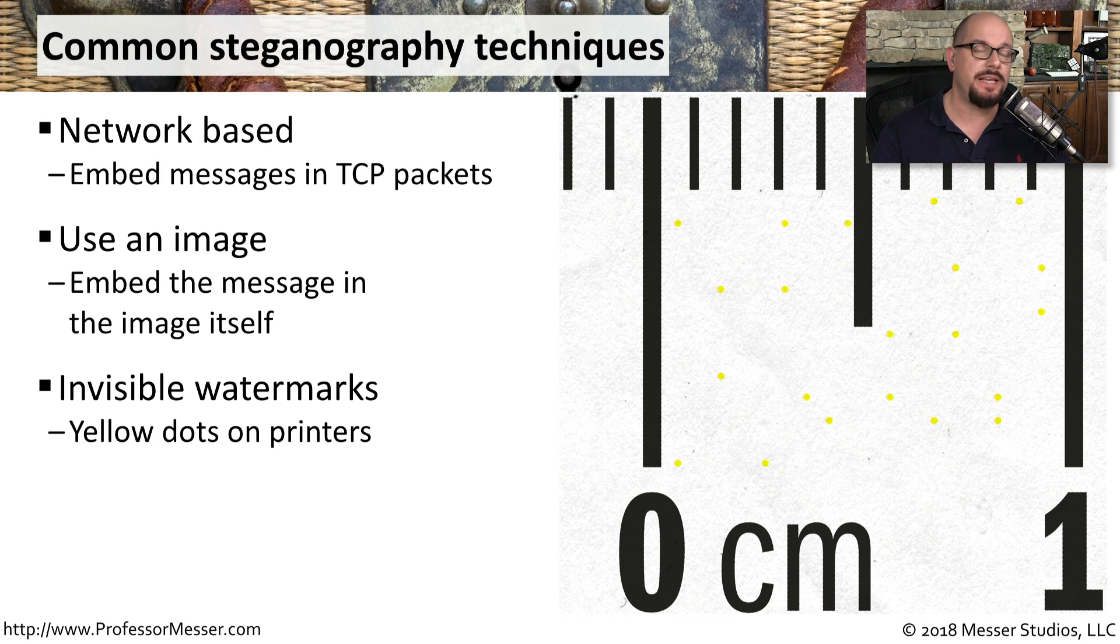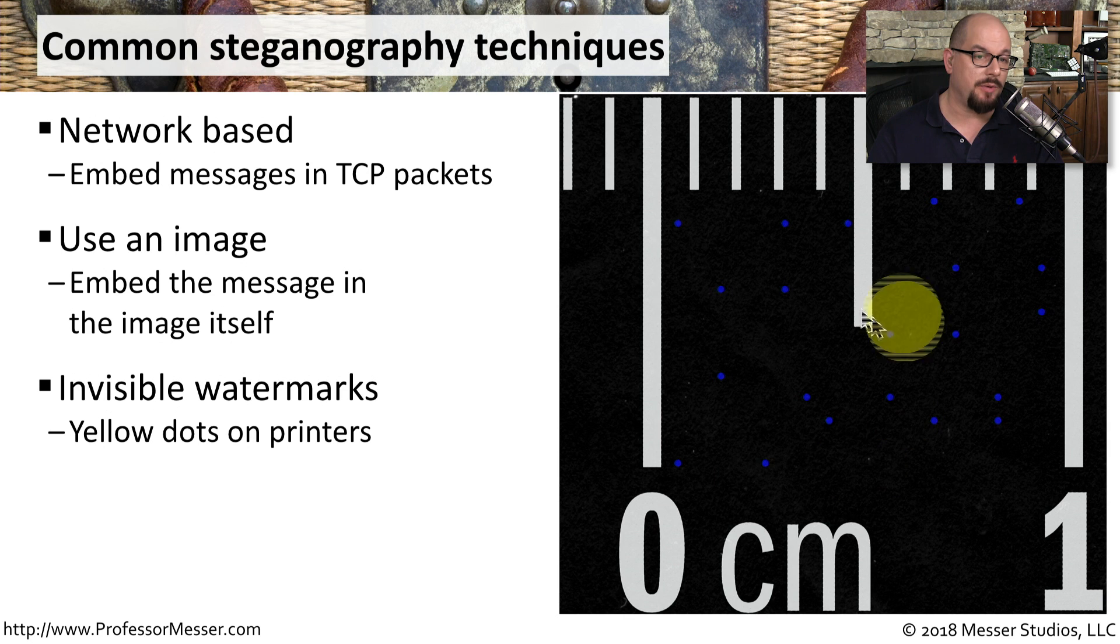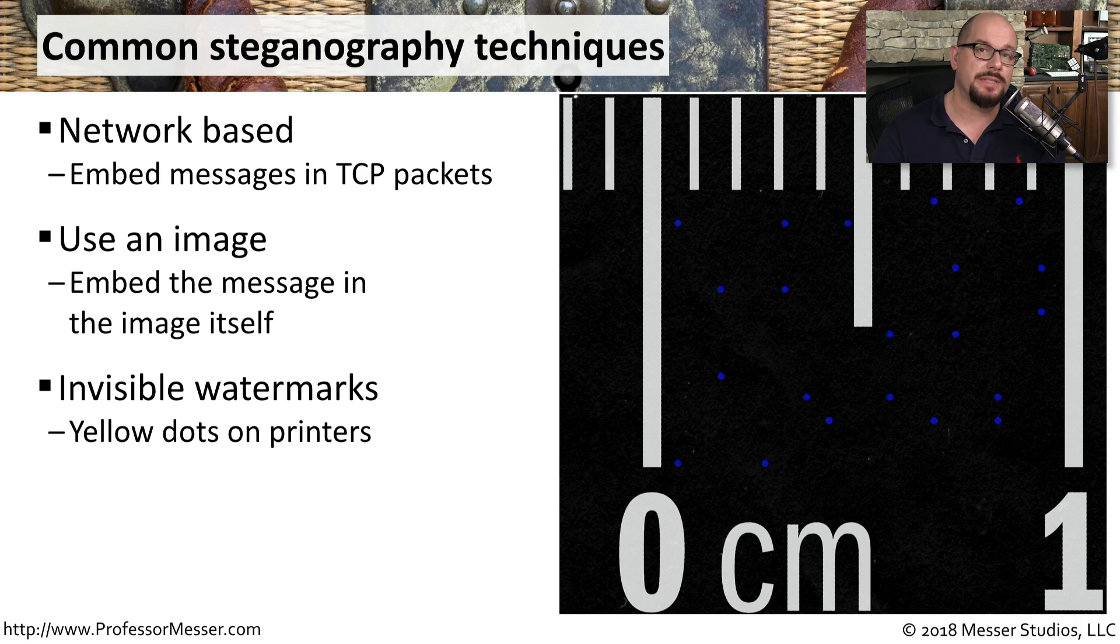So if somebody received a piece of paper, they would be able to tie it back to a specific printer. You can almost see the yellow dots on this image. If I reverse the image, you'll see the dots are now blue. You should be able to look at an output from your laser printer, and if you look carefully, you'll be able to see the dots on your output as well.